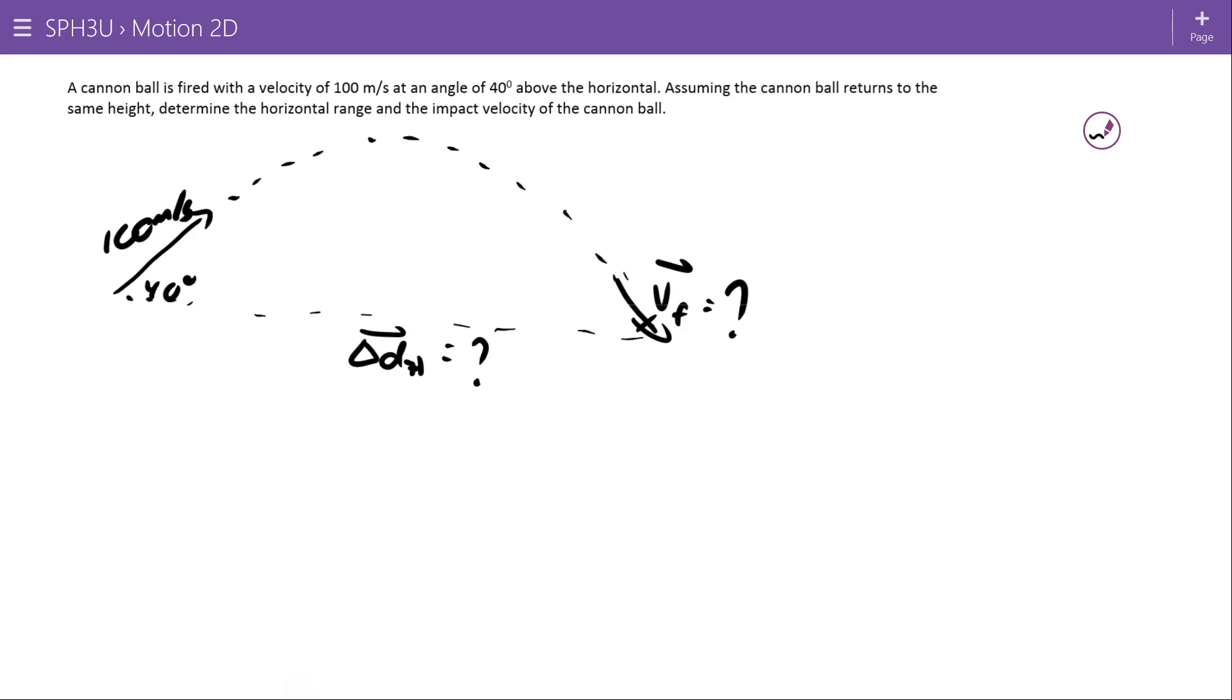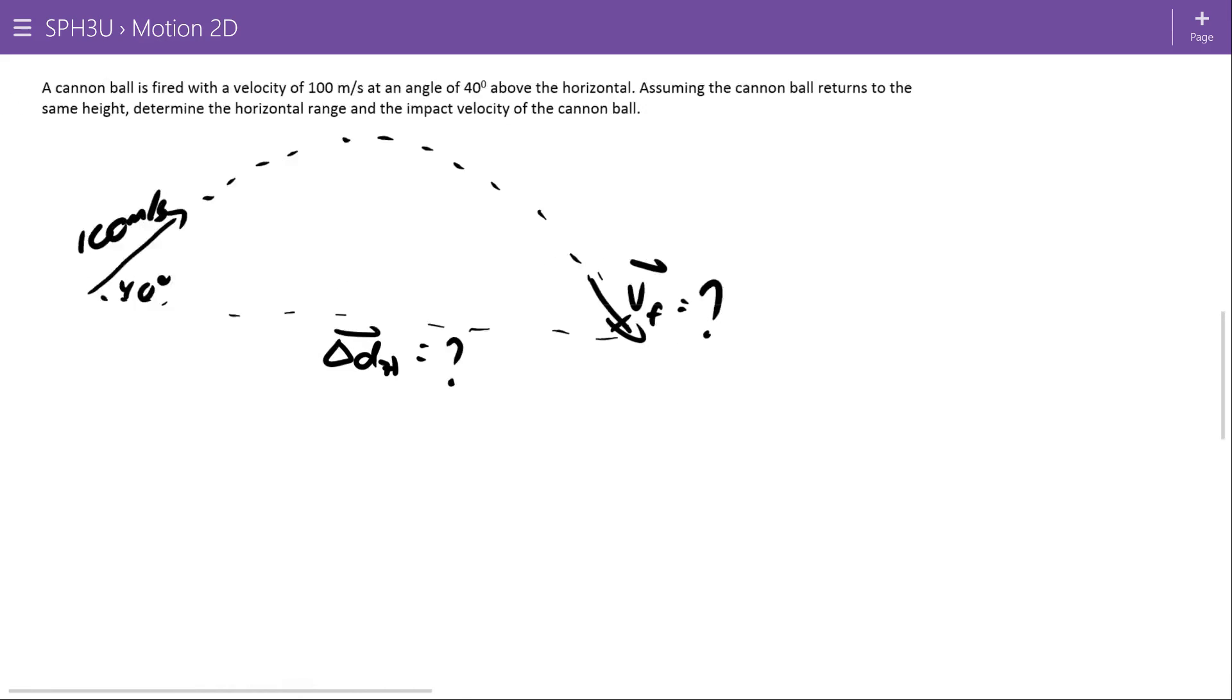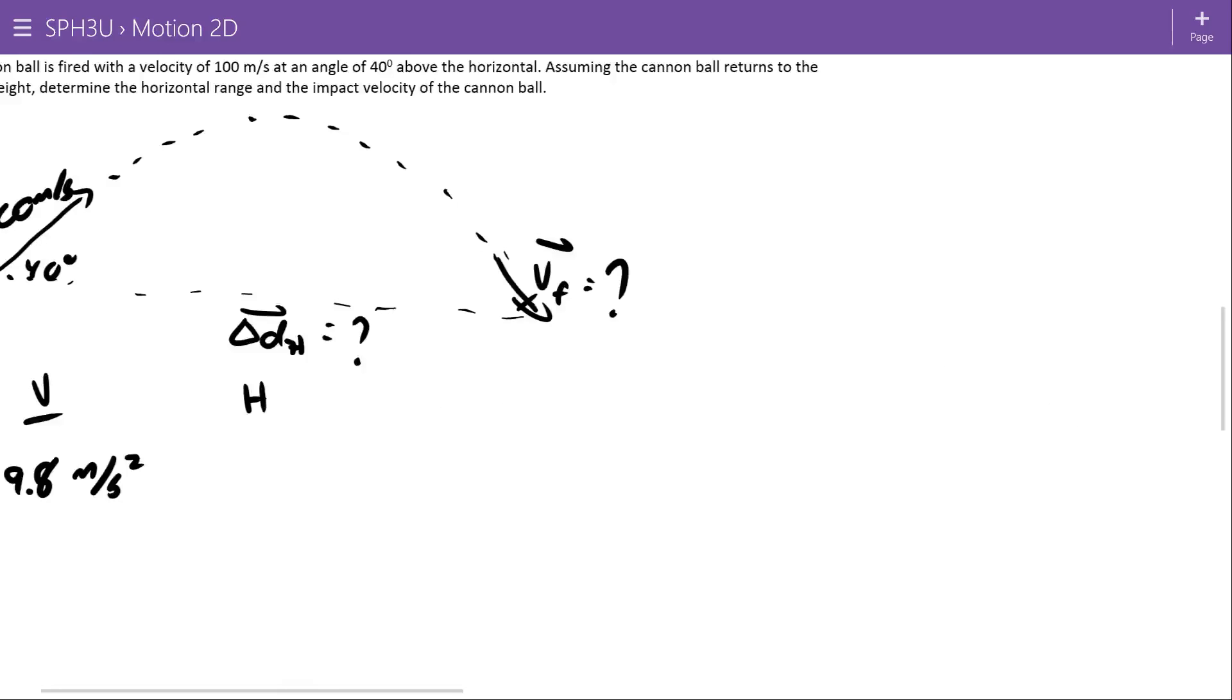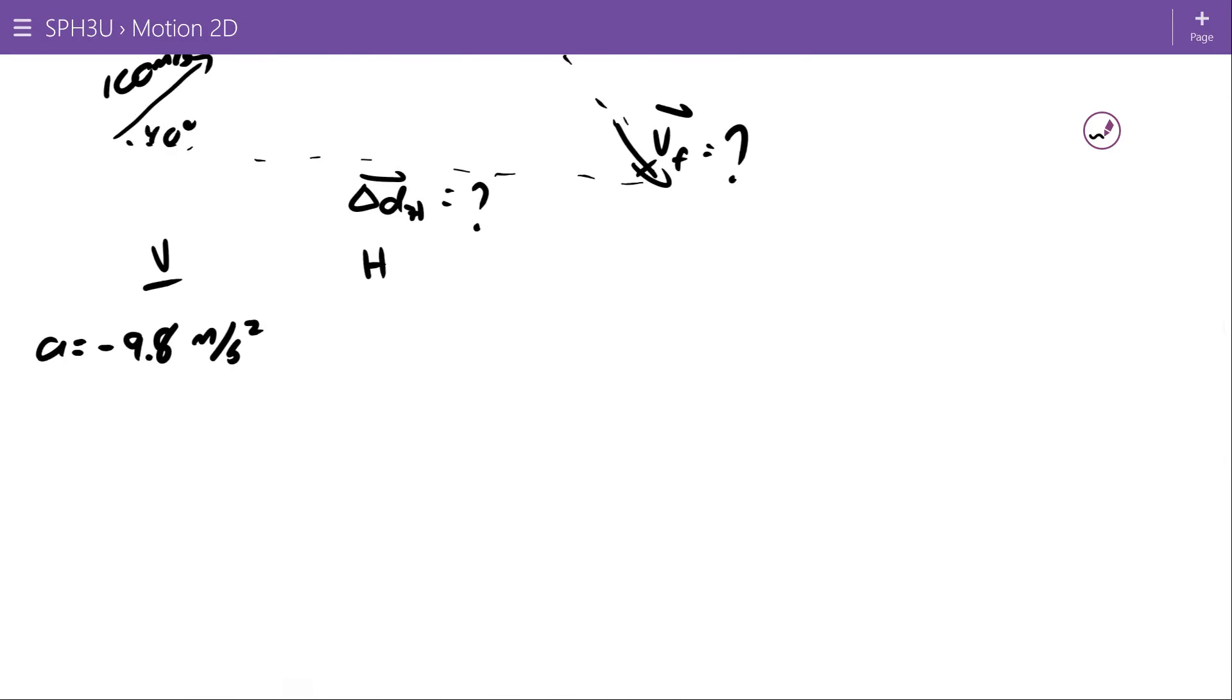I'm going to focus on the horizontal range first, and then I'll come back and discuss the impact velocity. In the vertical direction and the horizontal direction. In the vertical direction, I start with my acceleration of negative 9.8 meters per second squared. One more time we're assuming that gravity is the only force acting on this object, and if that's true, then that would be its acceleration. And here in the horizontal direction, we're dealing with an acceleration of zero. Again, no horizontal significant forces.